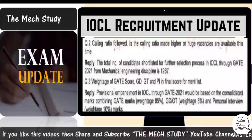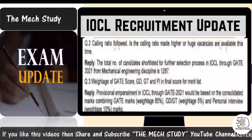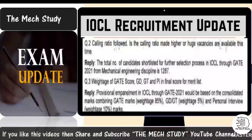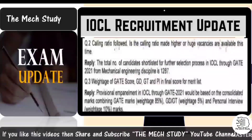The next RTI question asked about the calling ratio and whether it is higher given the vacancies available. The reply stated that the total number of candidates shortlisted for the further selection process in IOCL through GATE 2021 is 1287. Around 1287 people were called against approximately 105 vacancies for the general category alone. The overall calling ratio is roughly 1:2, meaning for about 400 total posts, around double that number were called.